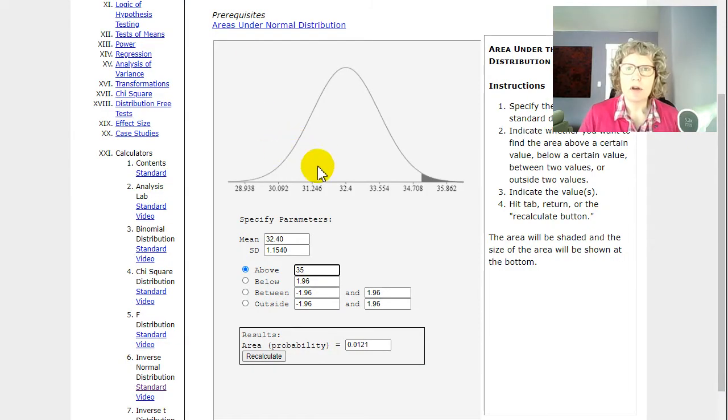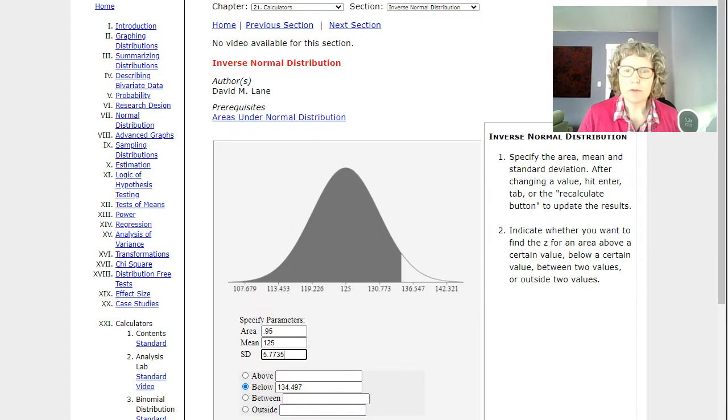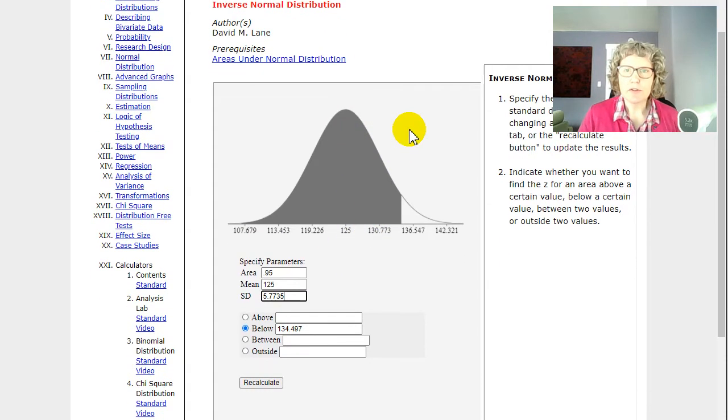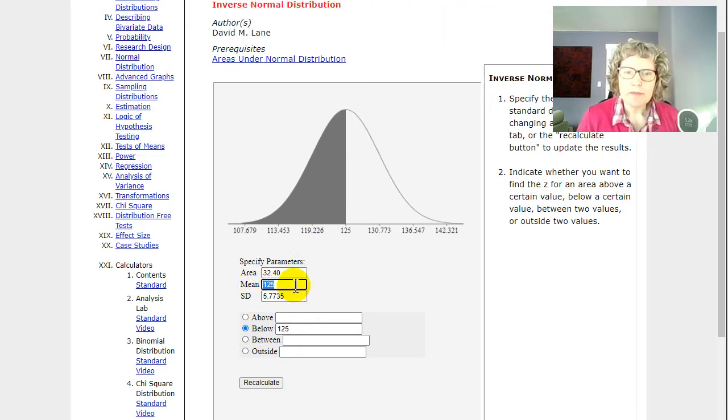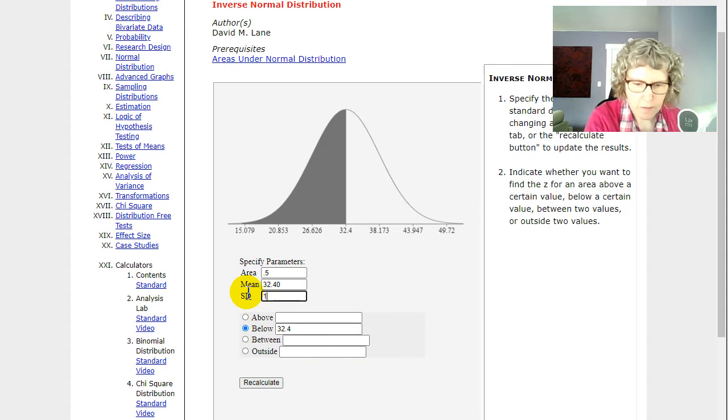So we go back to our online stat book for that, and we're using our same distribution that we've already defined. This time I'm going to go to inverse normal for this one. I haven't been doing this for a little while. So, 32.40, we want the between is what we're looking for. So we want 0.5 is our area, the middle 50%. And then our mean is 32.40. And our standard deviation is 1.154. And then we want between. So this is area is the middle 50%. You can see it matches up with my picture, how it's just inside the first standard deviation on each side.